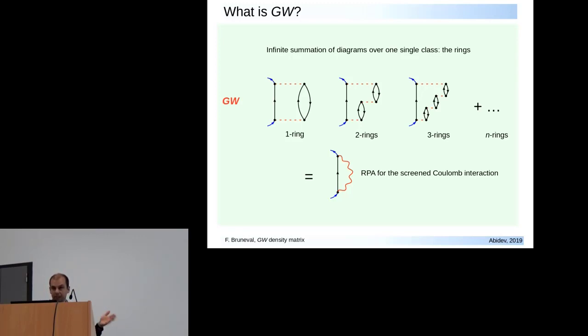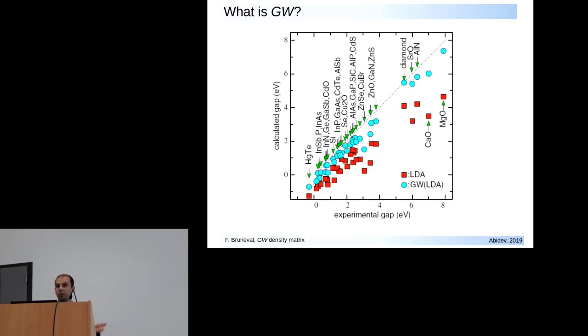GW is just the name of the self-energy, G times W. Why do people like this approximation? It's because that's one of the only methods in solids that give the right bandgaps. If you look at all these series of materials where the bandgaps have been calculated within LDA or GW, then it's really an impressive series. You see that the GW points are very close to the diagonal, which means a perfect agreement between experiment and theory. That's why people like GW and want to use Abinit for that.